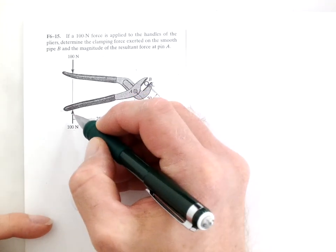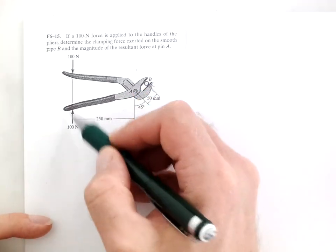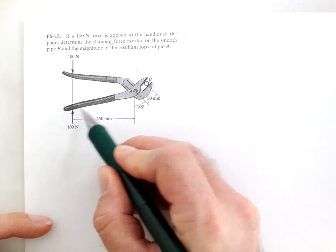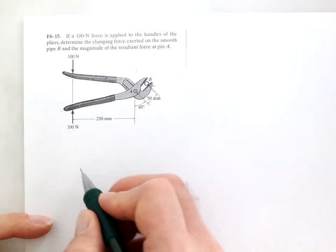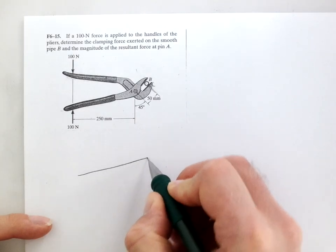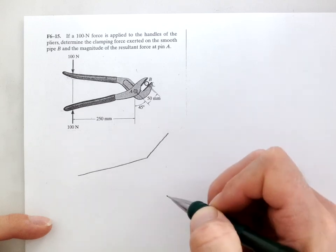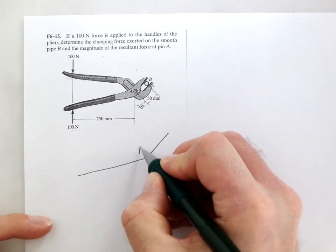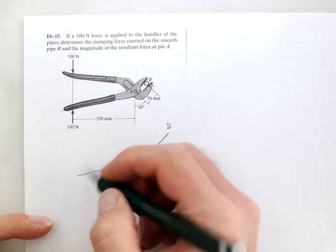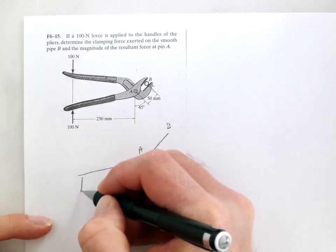So we put 100 newtons here, 100 newtons here, and what's happening at B. Let's draw a free body diagram with just this lower handle. It looks something like this, with points A, B, and 100 newtons straight up.